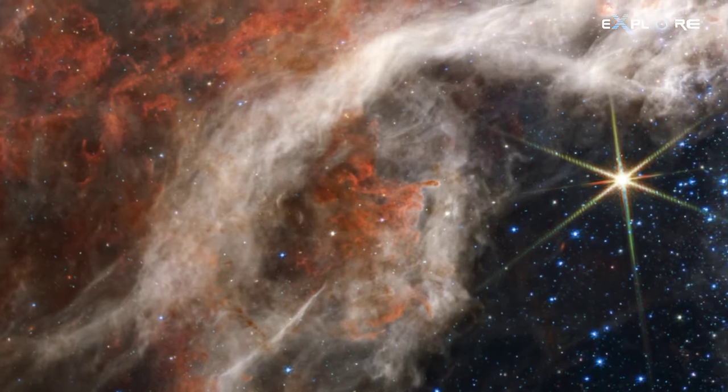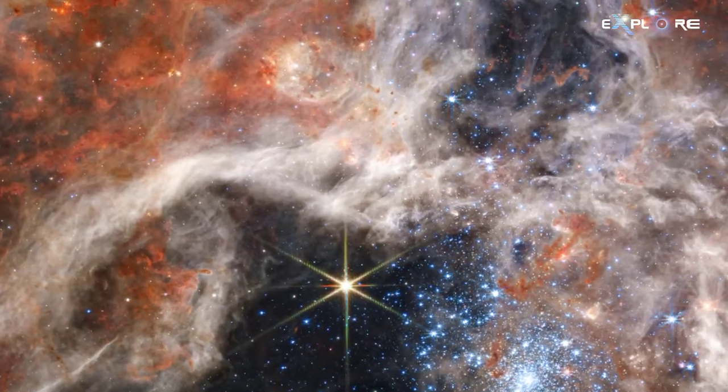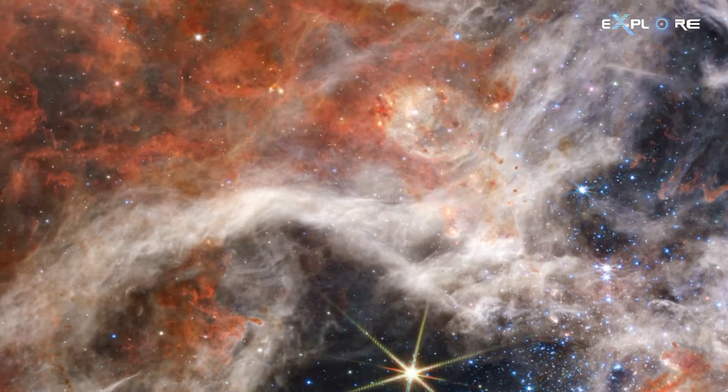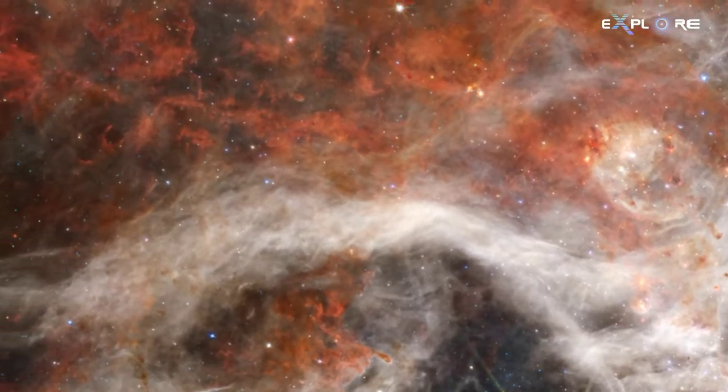Officially known as 30 Doradus, the region of space is characterized by its dusty filaments that resemble the legs of a hairy spider.